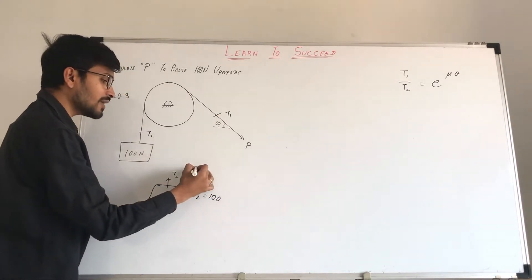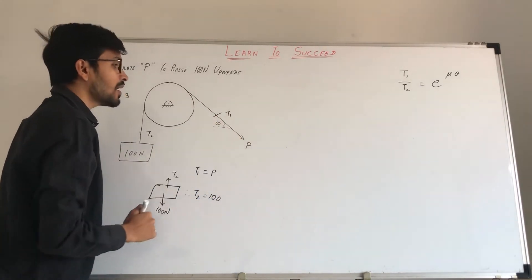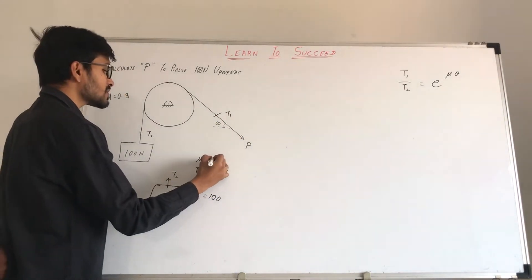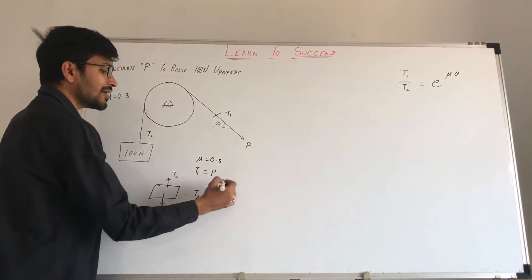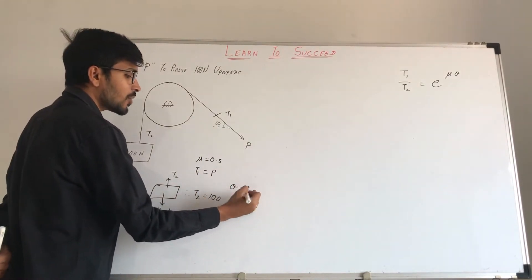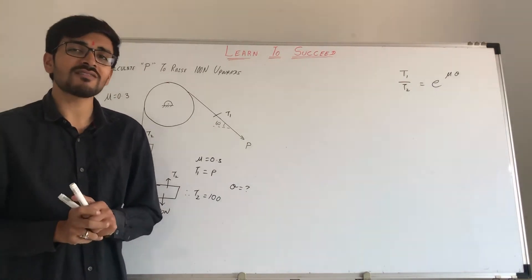Here T1 value is P, because it is the same. And mu is 0.3. Now we will find theta. Theta is the most important thing. Theta is the angle of wrap.